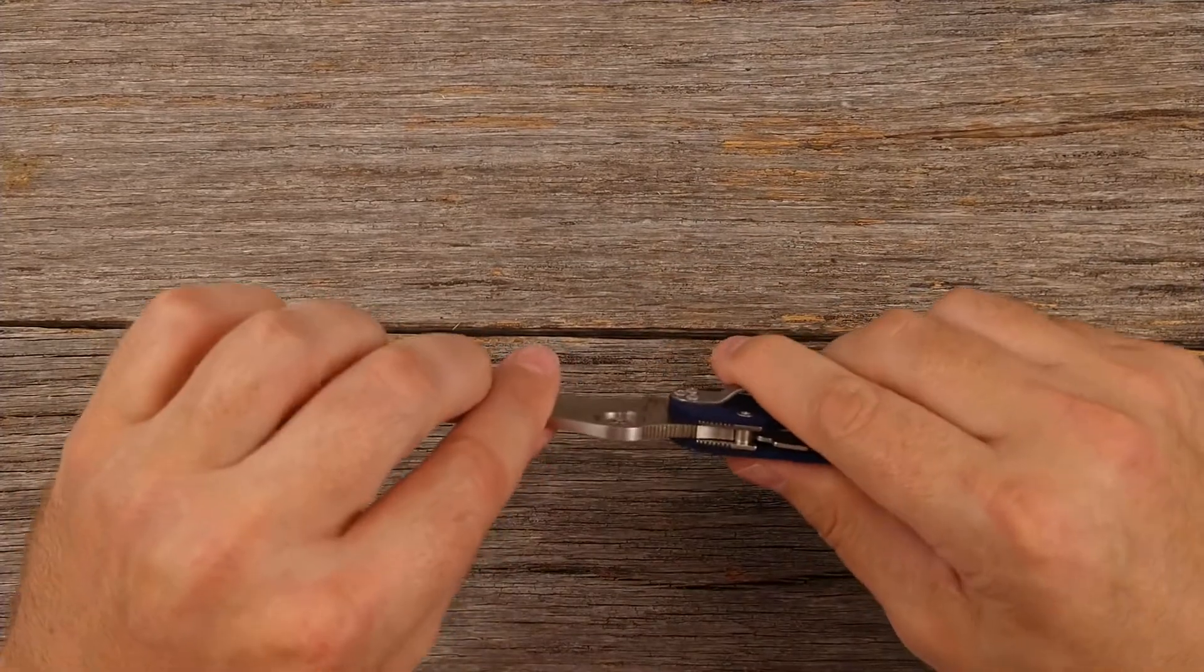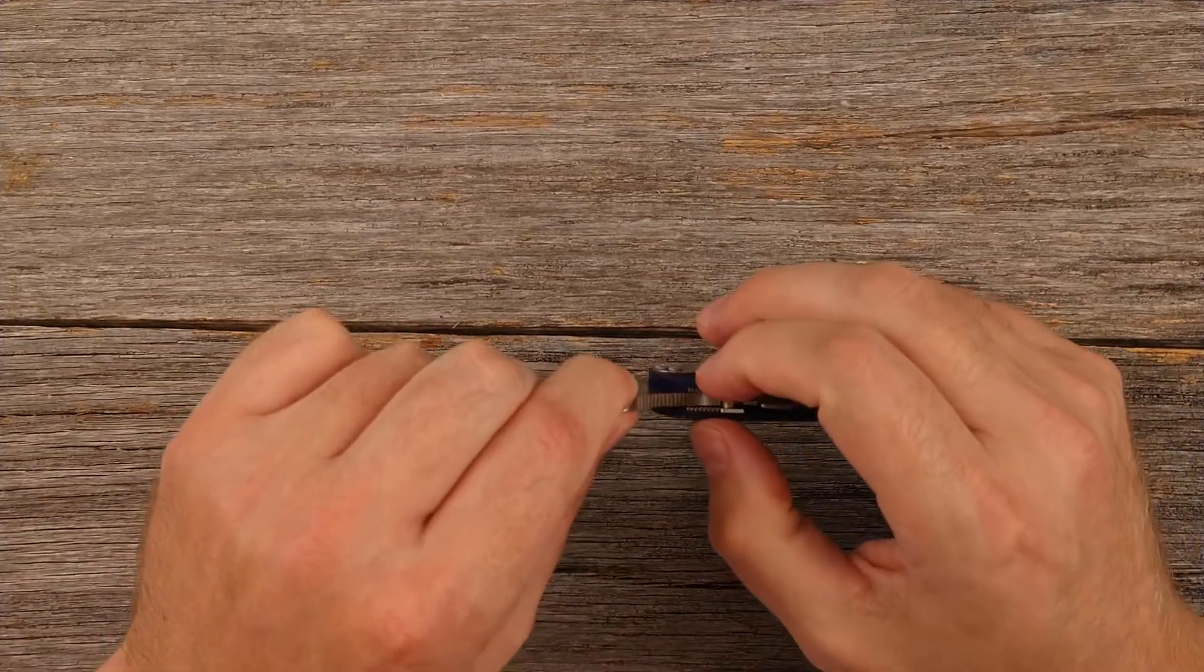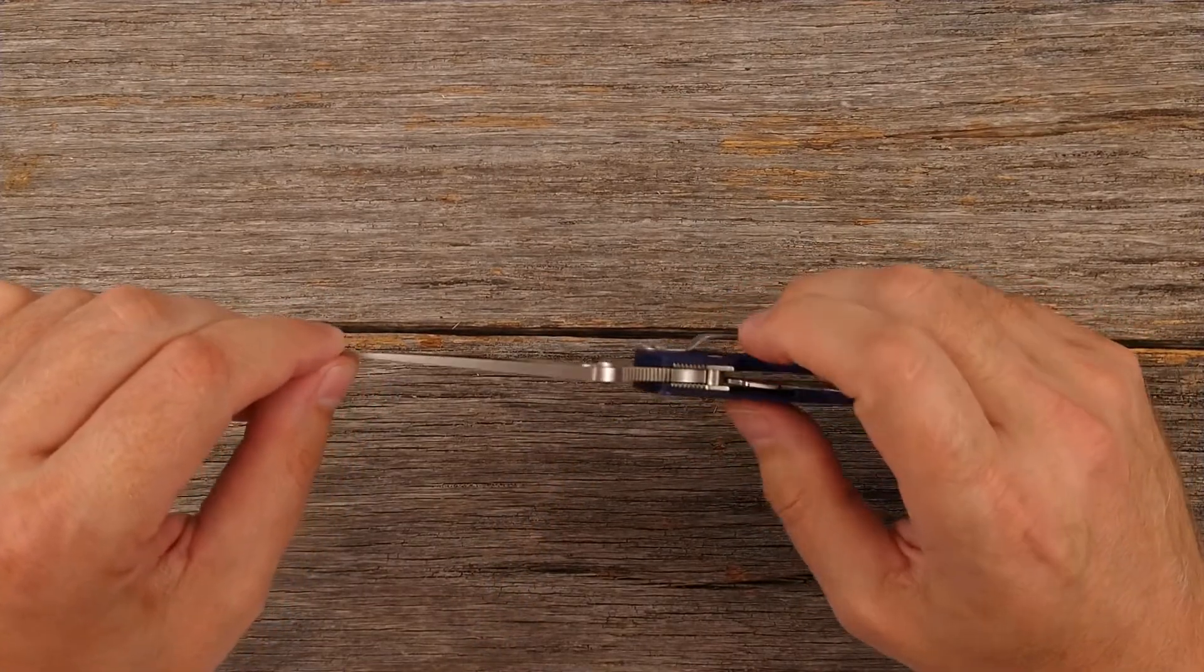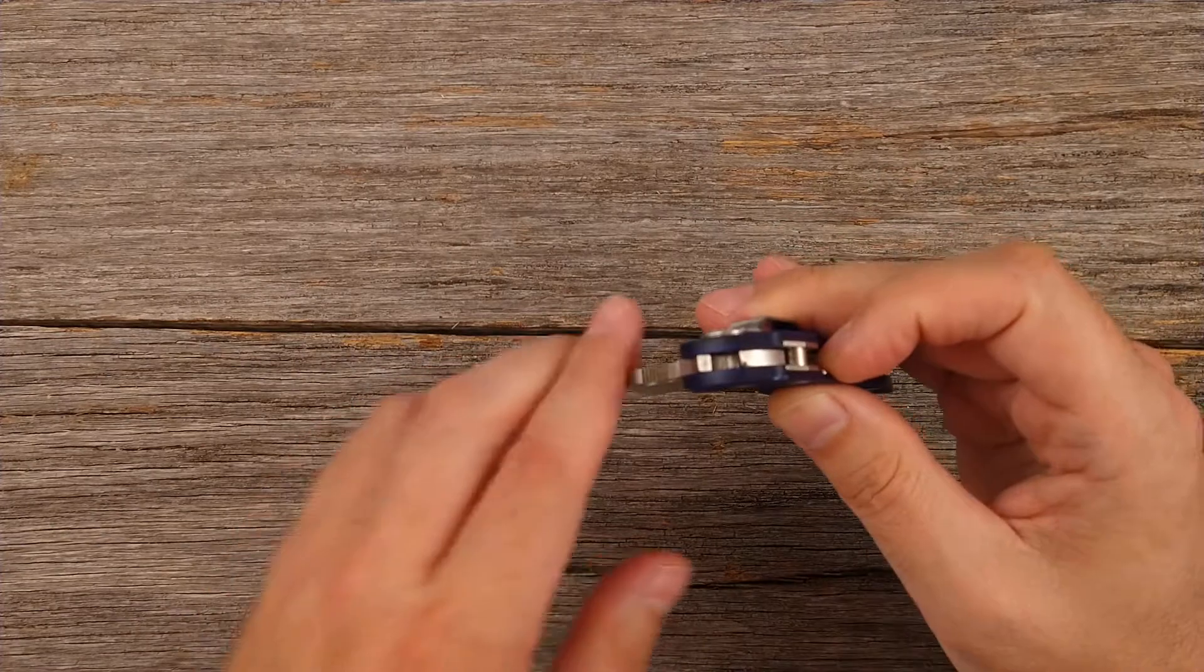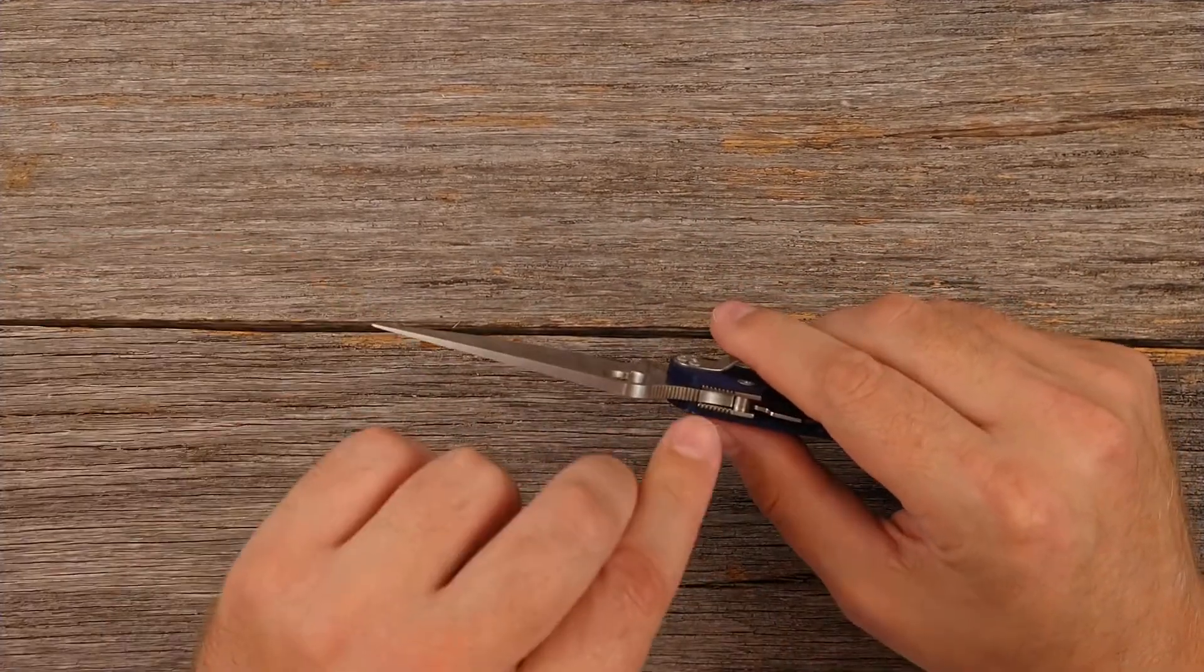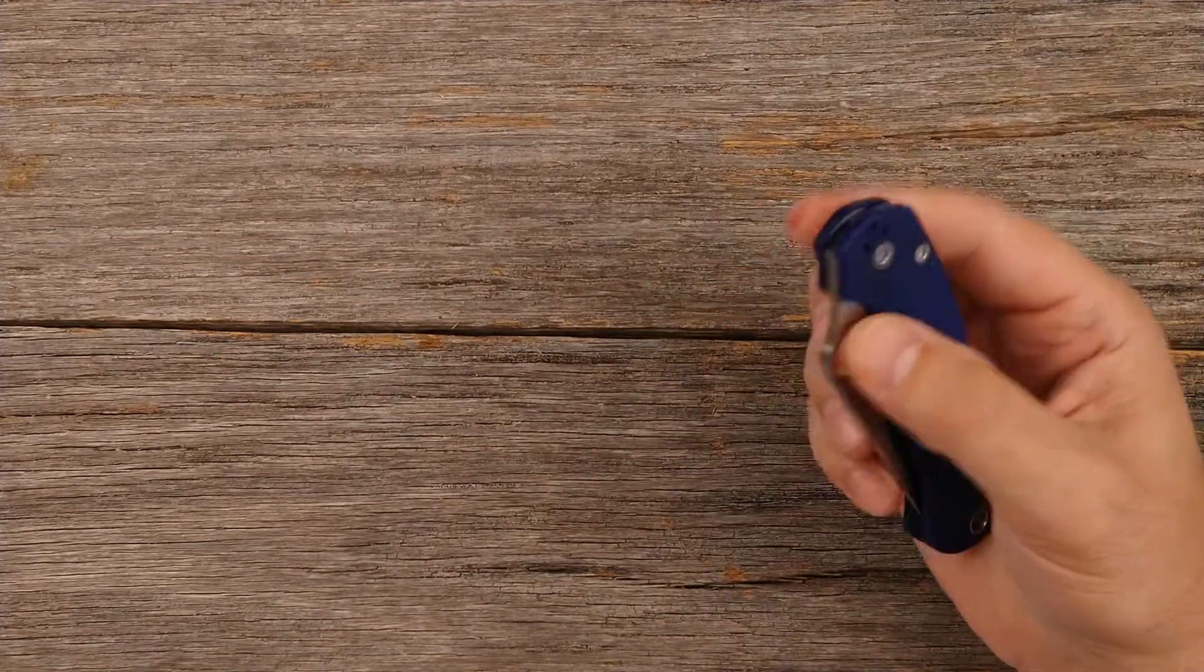But as loose as that blade looks when you do that, how it just flies open and close like that, there is absolutely no play whatsoever in the blade itself. I mean, this thing is super tight lockup side to side. No blade play at all, and yet super smooth to open, which is kind of a rarity. Usually, if it's that smooth on the open, you're going to have a little bit of slop there. You're going to have a little bit of blade play, and you just don't have that with this knife.